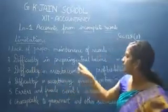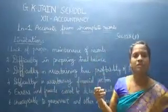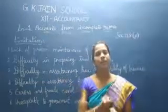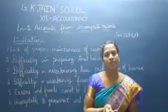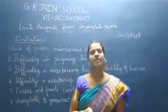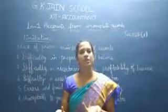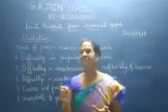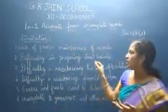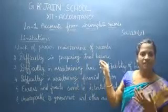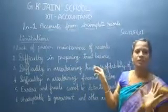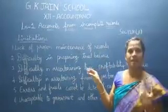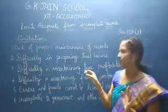The second limitation is difficulty in preparing a trial balance. Since many accounts are not prepared, when we compute the trial balance we don't have sufficient information at all. We cannot calculate the trial balance correctly — it will only give wrong information.